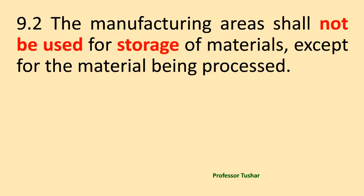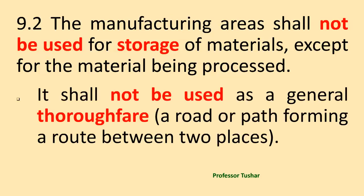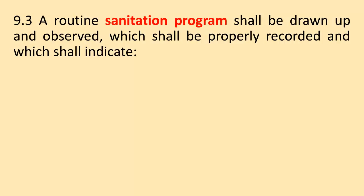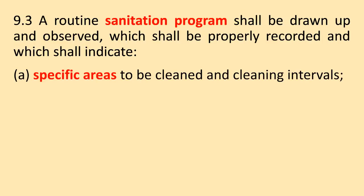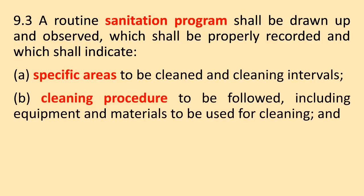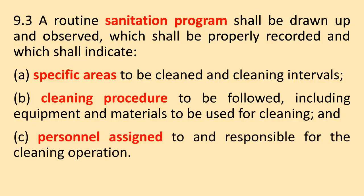Manufacturing areas shall not be used for storage of materials, except for the material being processed. It shall not be used as a general thoroughfare. A routine sanitation program shall be drawn up and observed, which shall be properly recorded and which shall indicate: a) specific areas to be cleaned and cleaning intervals, b) cleaning procedure to be followed, including equipment and materials to be used for cleaning, and c) personnel assigned to and responsible for the cleaning operation.